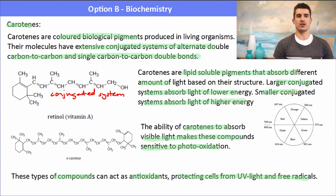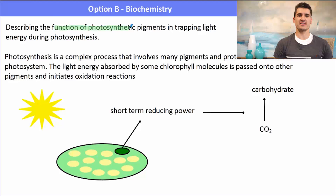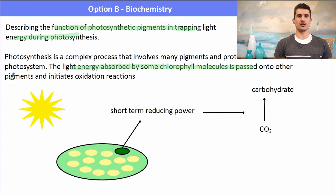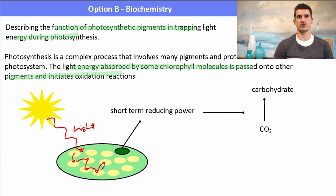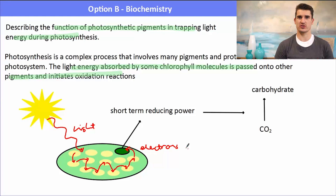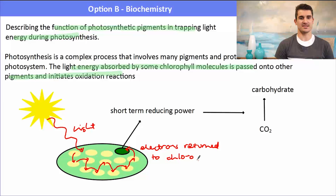Photosynthetic pigments trap light during photosynthesis. Photosynthesis is a complex process involving many pigments and proteins known as the photosystem. Light energy absorbed by some chlorophyll molecules is passed onto other pigments which initiate oxidation reactions. Light shines onto a plant, chlorophyll absorbs it, and different pigments pass electrons from one to another. Eventually those electrons are returned to the chlorophyll molecule, giving what we call short-term reducing power — extra electrons the chlorophyll can use to do work in the plant.